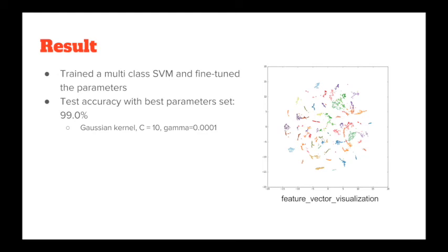Finally, we train a multi-class support vector machine on the feature vectors. With the best parameter set, we got a test accuracy of 99%, which is very impressive and exceeded our expectations, because our dataset is not quite similar to the original dataset used in the ImageNet challenge, which contains a thousand categories of objects encountered in everyday life. On the right is a visualization of the feature vectors. We can see that vectors of the same species tend to cluster together, which makes the support vector machine able to separate them.